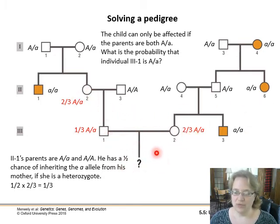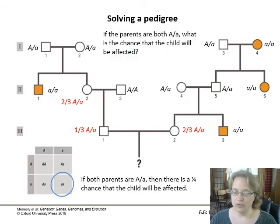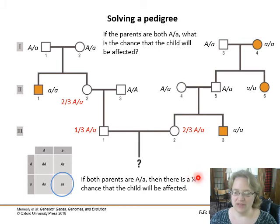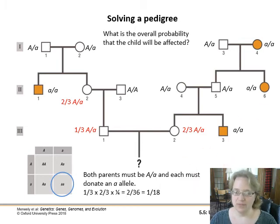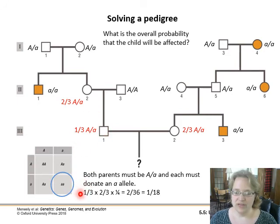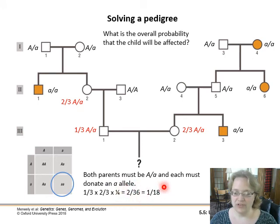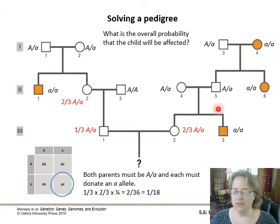What about the individual Roman numeral 3-1 way down here? If both parents are heterozygous — because there's a chance they could be — then there is a one-quarter chance the child will be affected. So we've got a one-third chance from the father and a two-thirds chance from the mother, and a one-quarter chance if all that happens, giving us two over 36, or a one out of 18 chance overall that this child will be affected by the genetic disease.